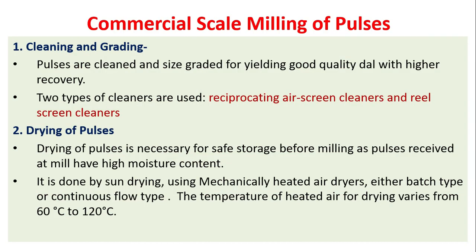Commercial scale milling of pulses begins with cleaning and grading. Pulses are cleaned and size-graded for yielding good quality dal with higher recovery. Two types of cleaners are normally used: reciprocating air screen cleaners and reel screen cleaners. The next step is drying of pulses.